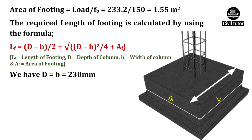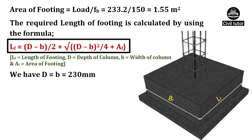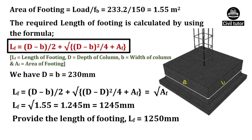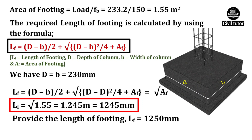Now, we need to calculate the length of footing. The required length of footing is calculated by using the formula: LF = (D - B)/2 + √((D - B)²/4 + AF), where D is the depth of column, LF is the length of footing, B is the width of column, and AF is the area of footing. We have D and B both equal to 230 mm and the area of footing is already calculated as 1.55 meter square. On substituting these values, LF will be equal to 1245 mm or simply 1.24 meter.